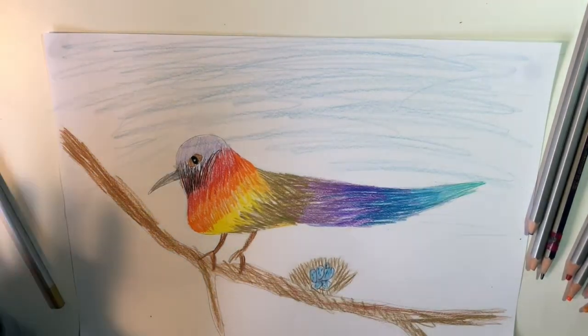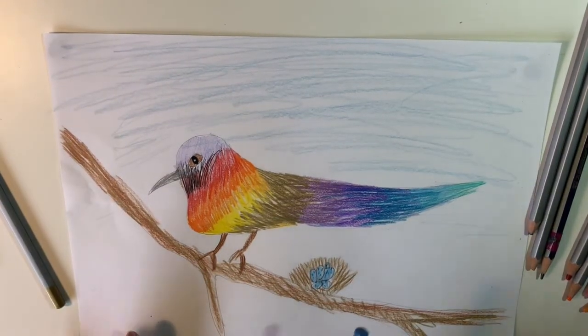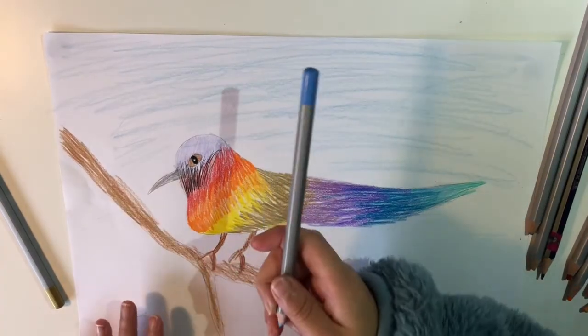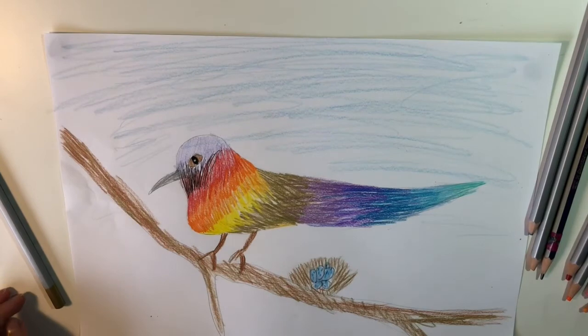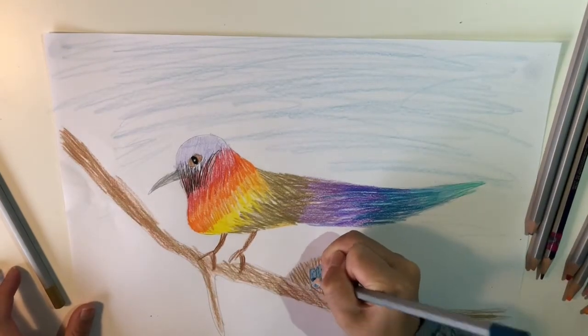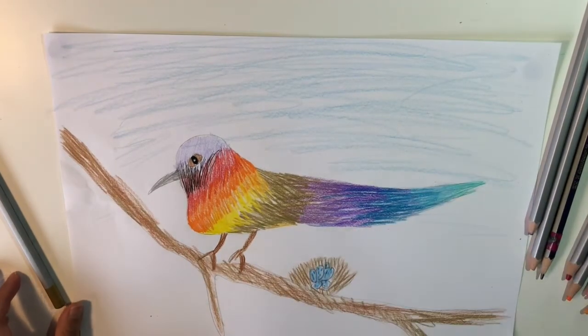And for the eggs, you need a very light, kind of sky blue, this color, to first do the eggs, and then you need a rather dark one to do the small dots on them.